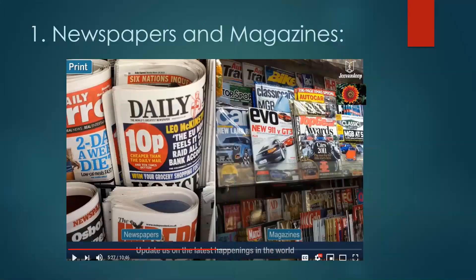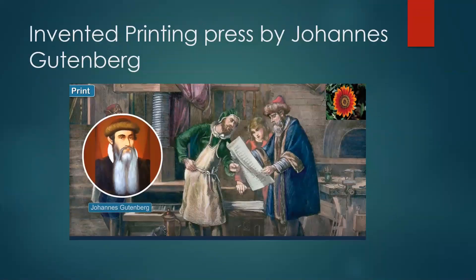First we are going to see newspaper and magazines — these are the first means of mass communication and they are part of print media. Newspapers and magazines bring us news from all over the world. Magazines and journals provide information on specific topics such as politics, sports, fashion, entertainment, environment, and so on. We can get all updates from around the world through the newspaper. The printing press was invented by Johannes Gutenberg.